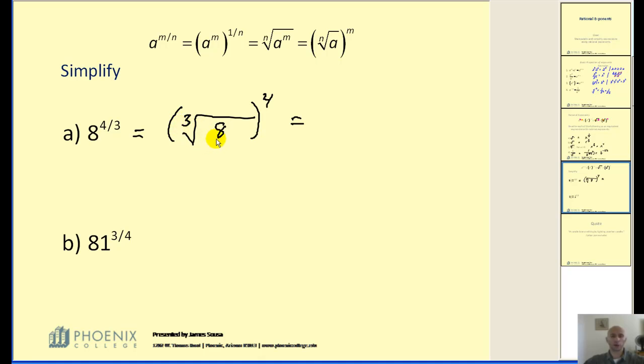Now eight is a perfect cube. So the cube root of eight is two. Two to the fourth, which of course simplifies to 16. We can easily verify this on the graphing calculator. Let's do that.